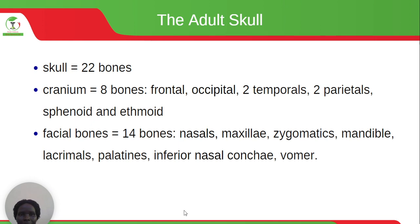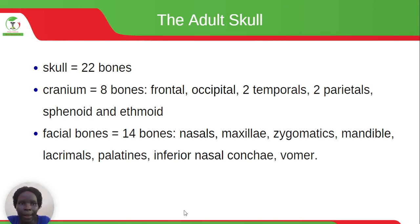The adult skull consists of 22 bones. We have eight bones found in the cranium: the frontal, occipital, the two temporals, two parietals, sphenoid, and the ethmoid.